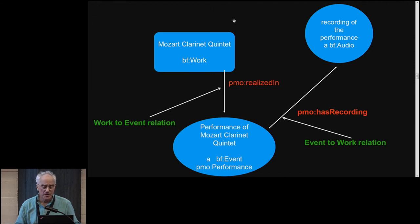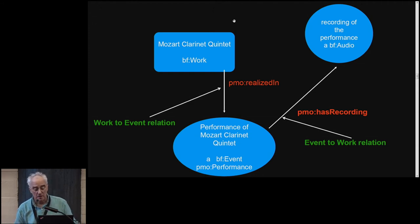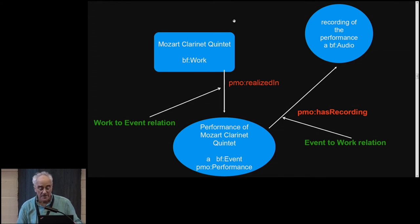The music people took a look at the BibFrame event model and said that the relatedTo relationship isn't good enough — they want to relate works and events. So here you have an event: a performance of the Mozart clarinet quintet is a BF event, and in music terms it's a PMO performance. You also have the event-to-work relation as recording.